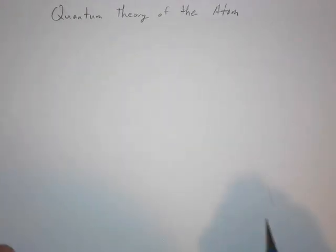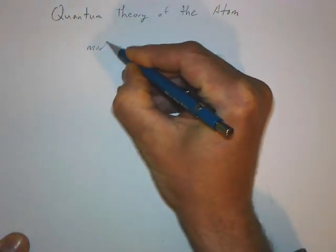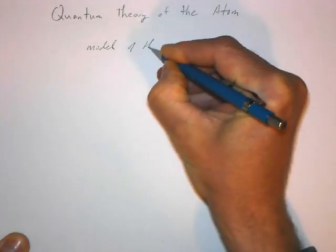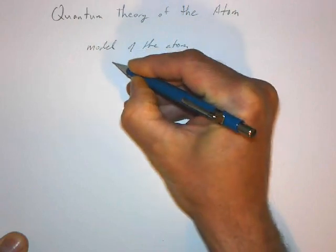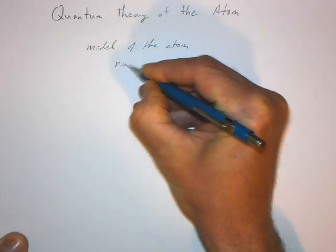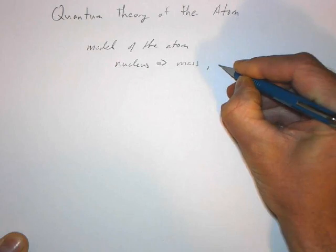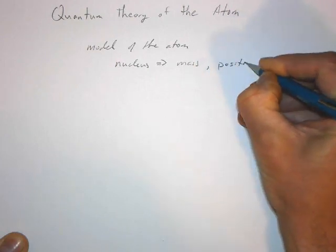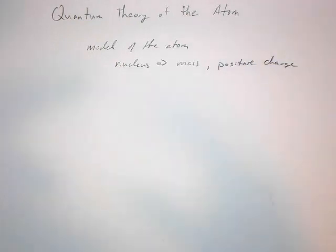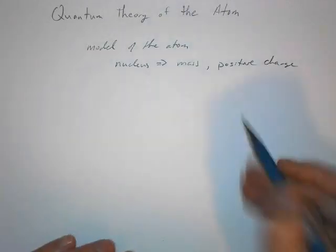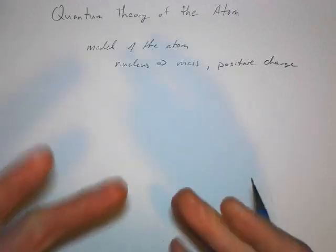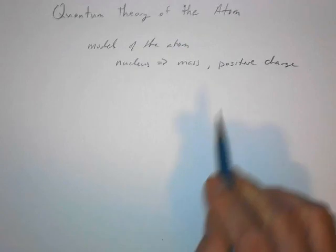This is the beginning of the quantum theory of the atom. If you recall at the beginning of the semester with the Rutherford model of the atom, we had a nucleus. Our model of the atom consists of a nucleus where most of the mass and a positive charge is located. We know now that most of that mass is due to the neutrons and the protons, and the positive charge is due to the protons that exist within the nucleus.